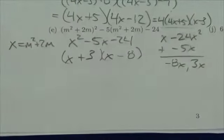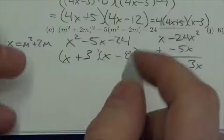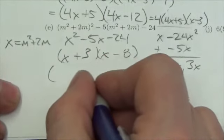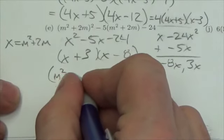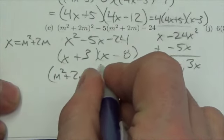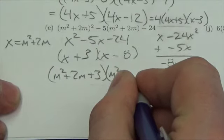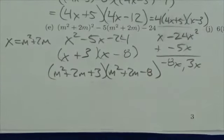Then I erase that stuff that I used to help me. Because now what I got to do is put that substitute back in the x. Now the x was m squared plus 2m plus 3. So now m squared plus 2m minus 8.